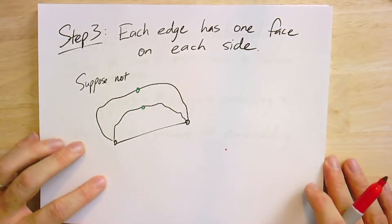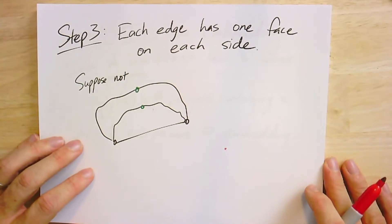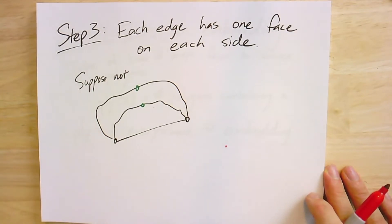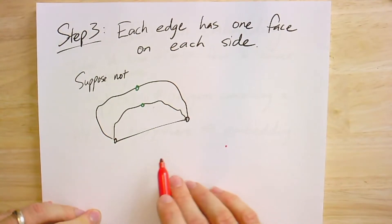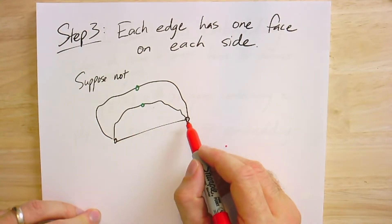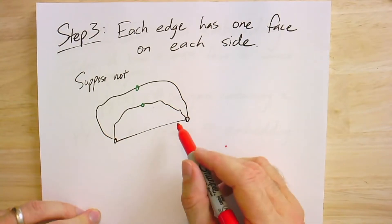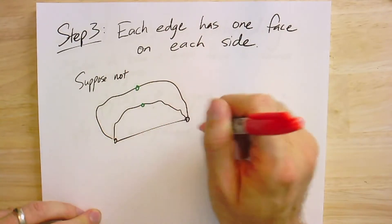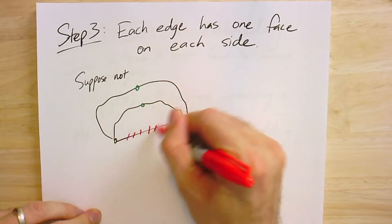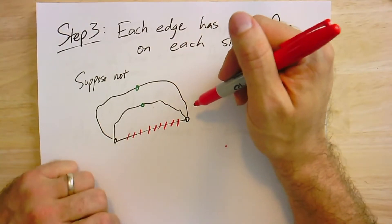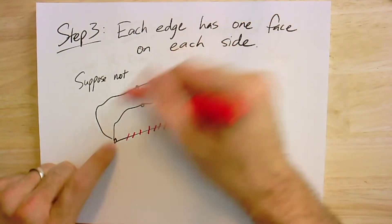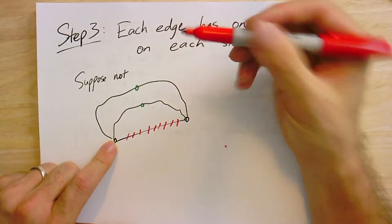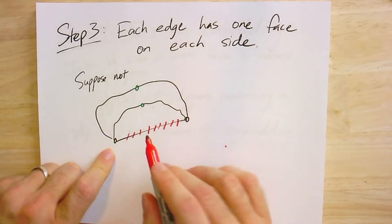There's another bad thing that could happen - maybe the faces are convex, but I have an edge with both incident faces on the same side of the edge. If this happens, I could remove this edge, leaving a new planar graph where both faces are glued together as a single face. Now I've got a face with four vertices: A, B, C, D.